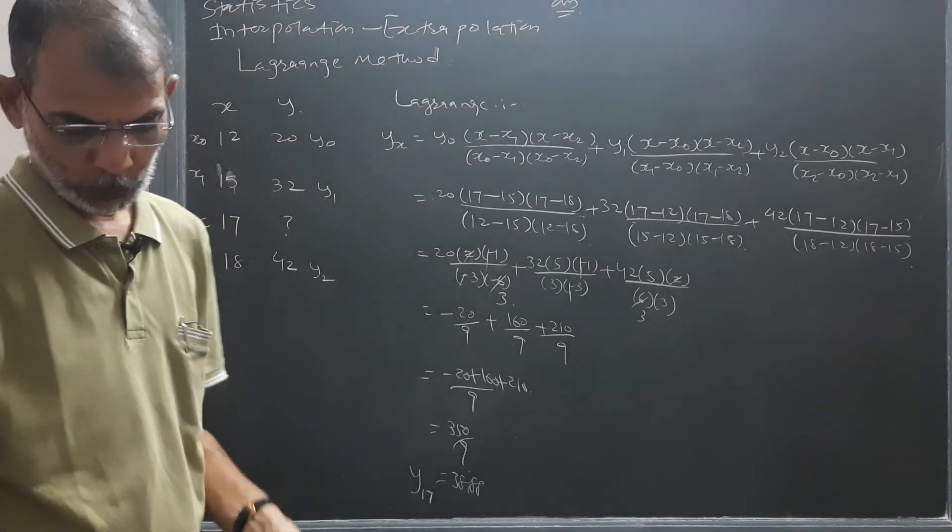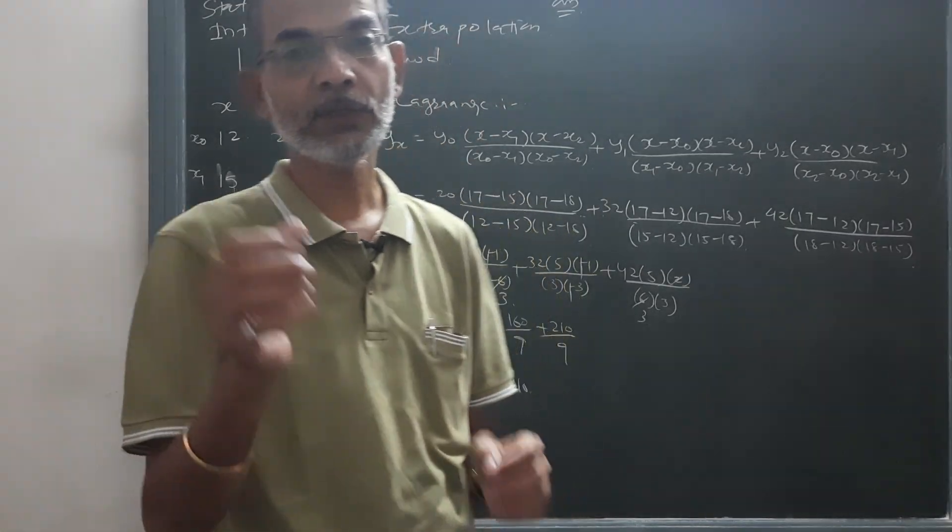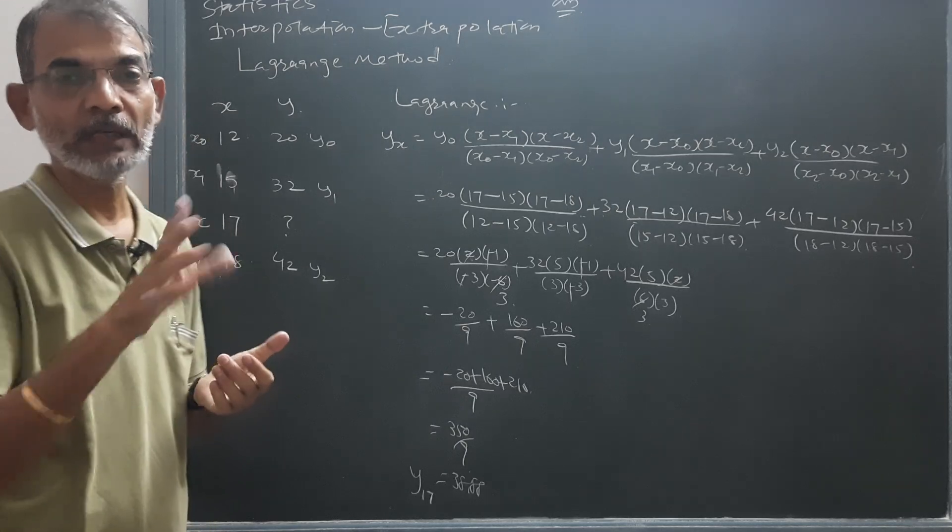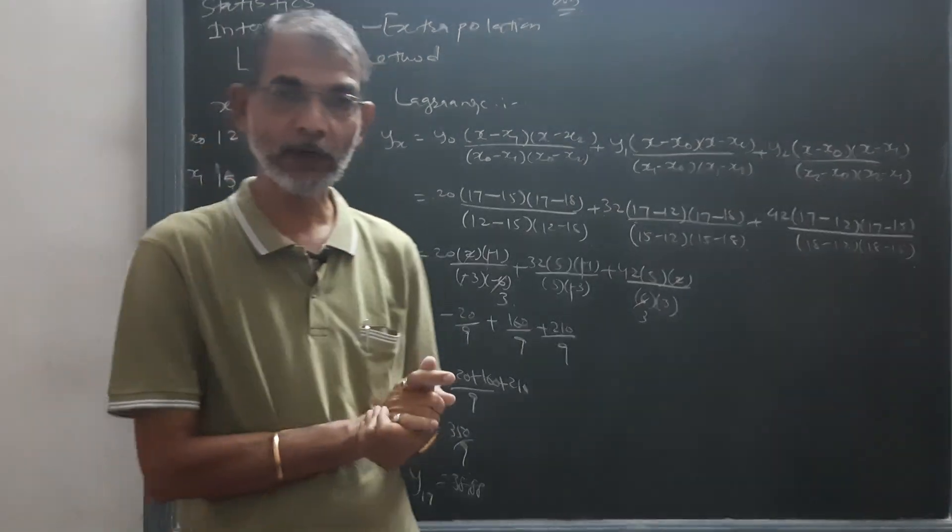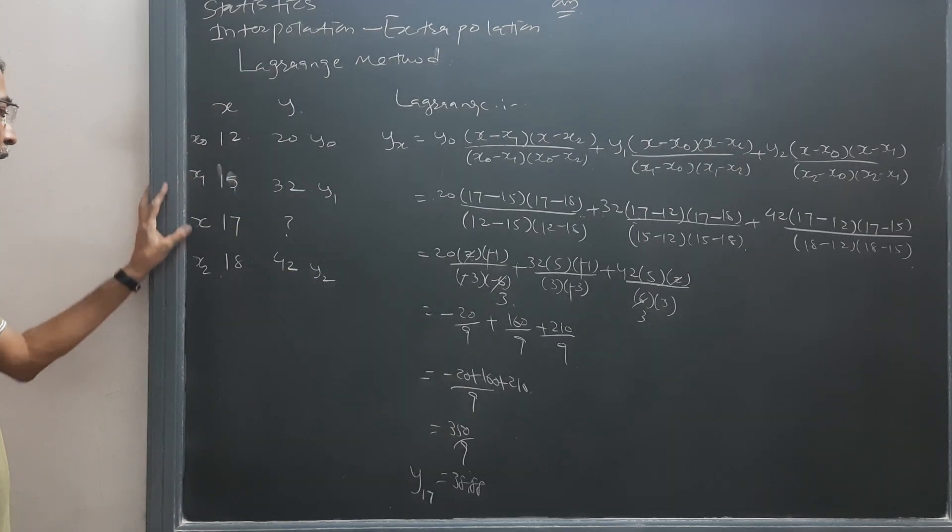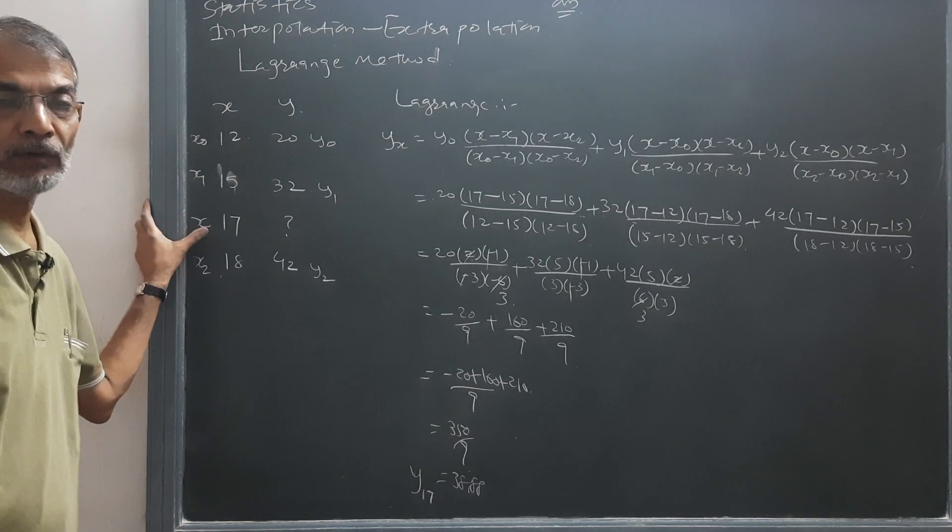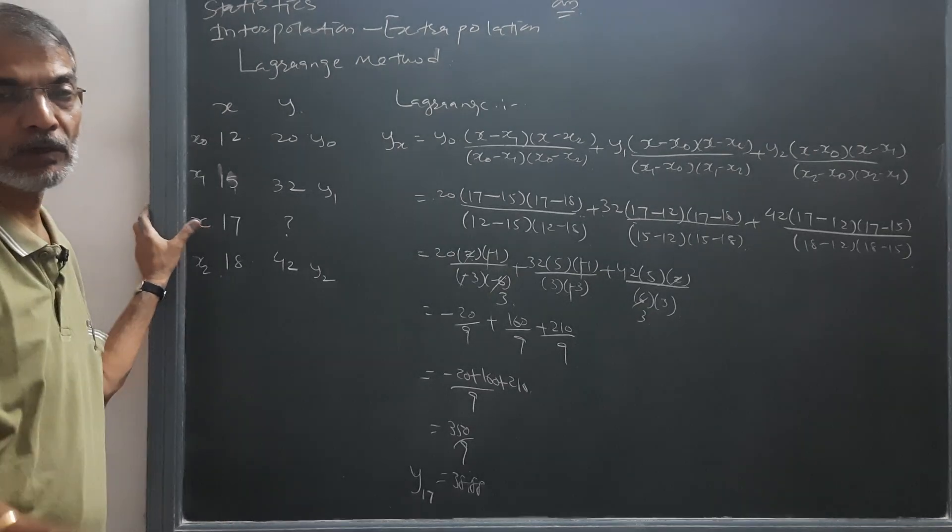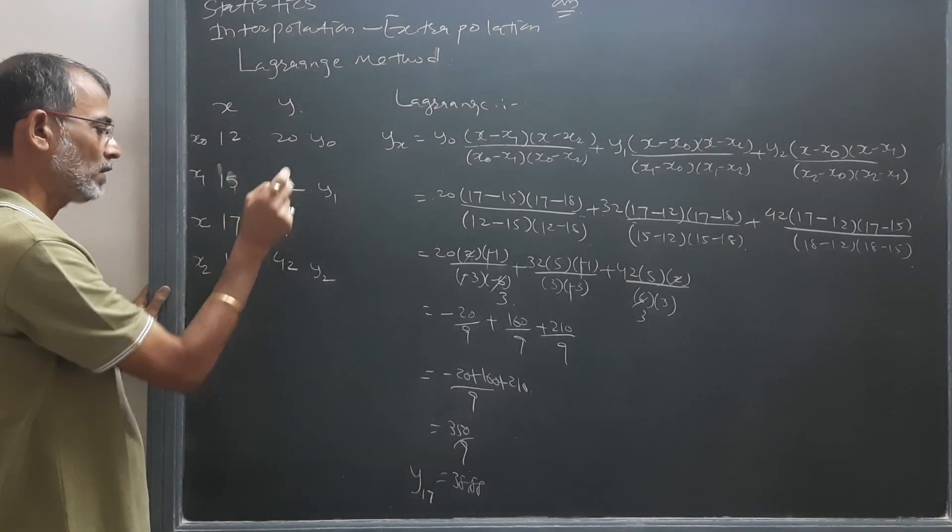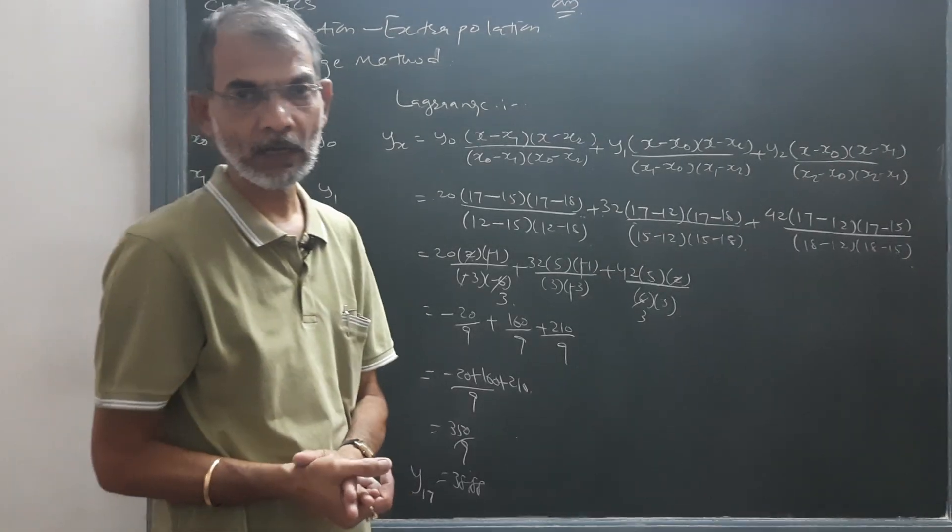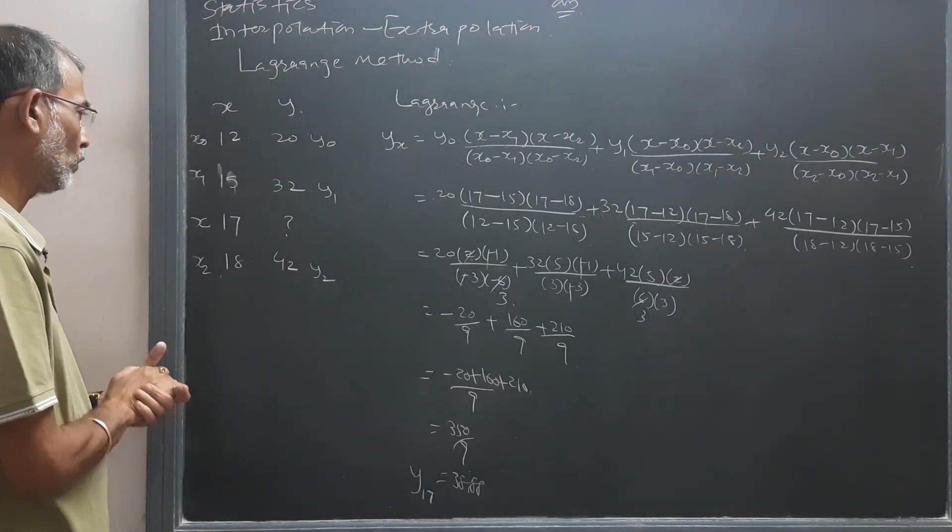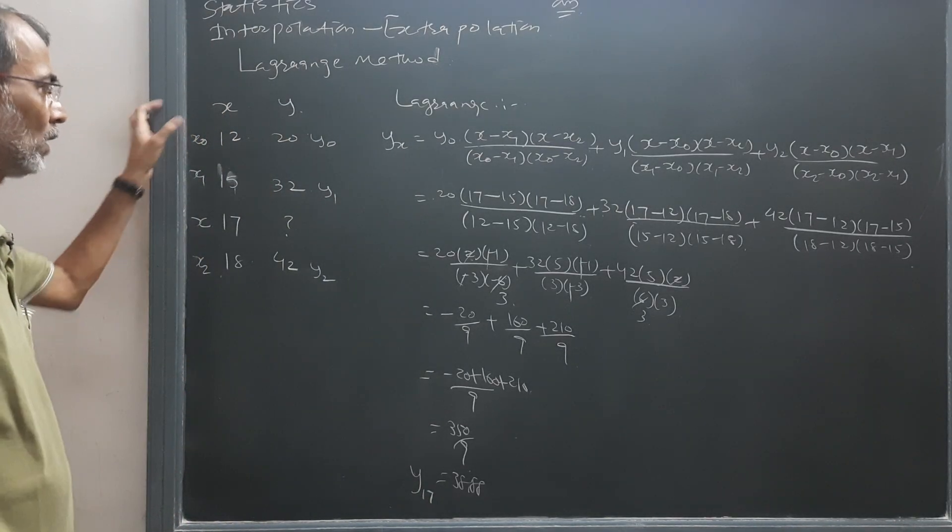In this way, Lagrange method is used when distance between the value of x is unequal. We will have to adapt Lagrange method. First you allot x0, x1, x2, and x. X will be allotted to where the value of y is missing. y0, y1, y2. Then formula will start if there are four values, one is missing.